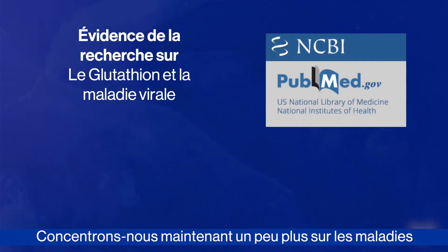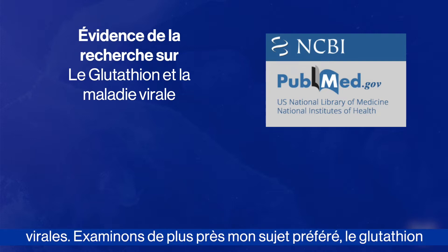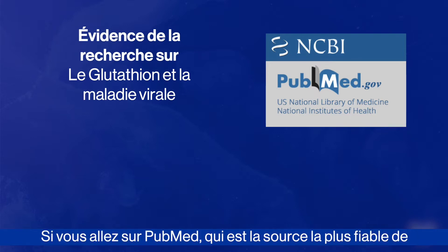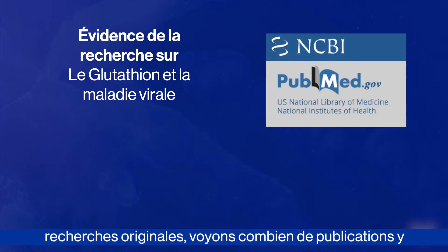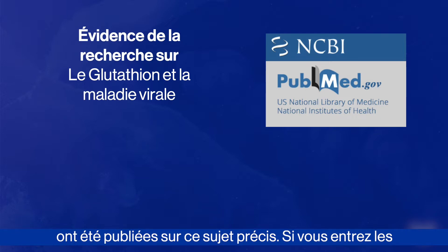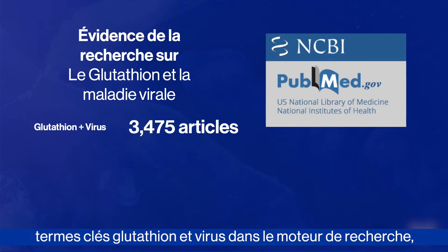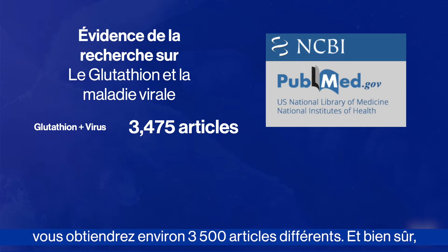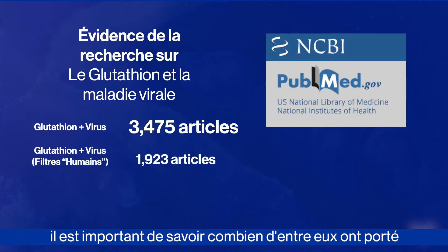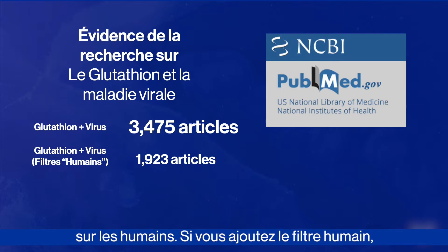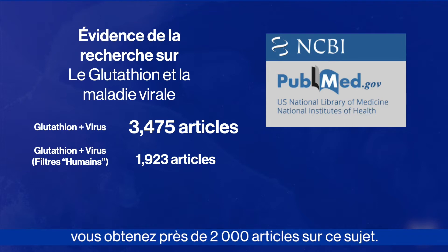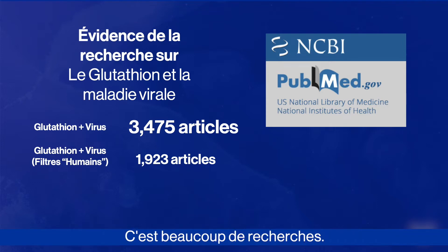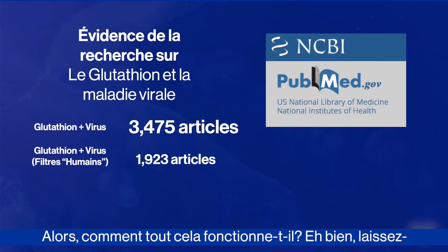Now let's focus a bit more on viral disease and take a closer look at my favorite topic: glutathione and viral disease. If you go to PubMed, which is the most reliable source of original research, and enter the key terms 'glutathione' and 'virus' into the search engine, you'll get back somewhere around 3,500 different articles. If you add the filter 'human,' you come up with almost 2,000 articles on this topic — that's a lot of research.